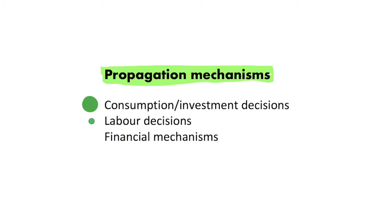We can also have changes in labor decisions. An increase in productivity causes an increase in the wage rate, so people may decide to work more — or we could have people deciding to work less because of a higher wage, representing an income effect versus a substitution effect. Changes in labor supply will have a knock-on effect on output and can lead to the shock propagating and lasting in the economy for much longer than the initial shock, causing a business cycle.